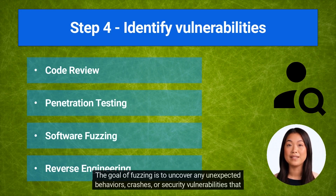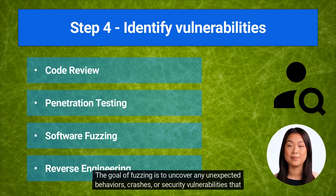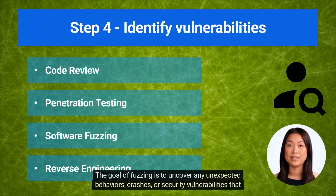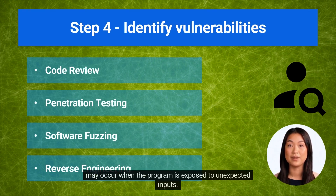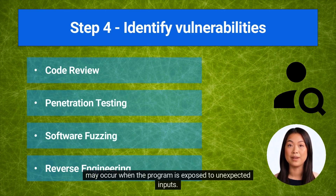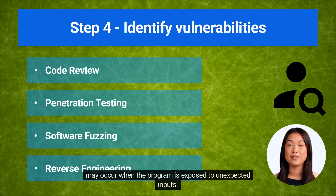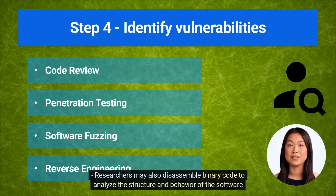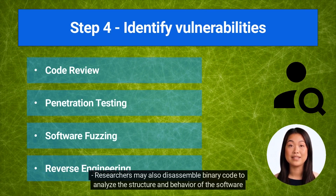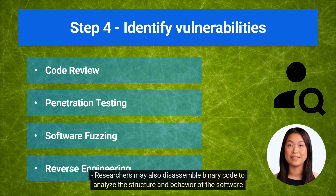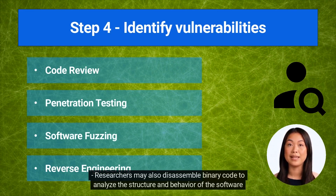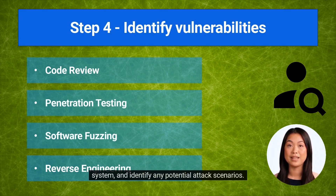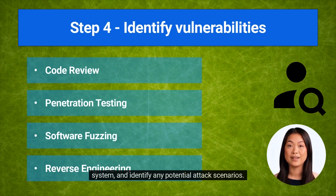The goal of fuzzing is to uncover any unexpected behaviors, crashes, or security vulnerabilities that may occur when the program is exposed to unexpected inputs. Researchers may also disassemble binary code to analyze the structure and behavior of the software system, and identify any potential attack scenarios.